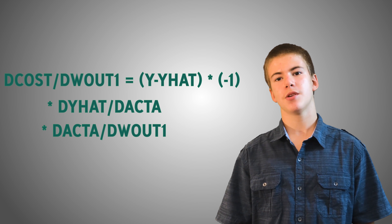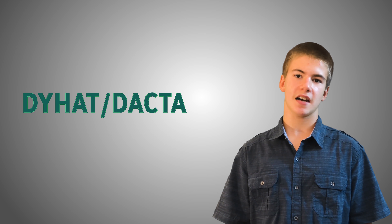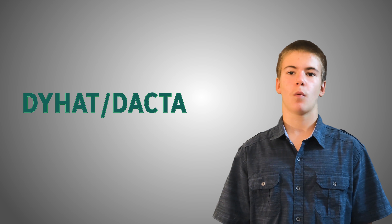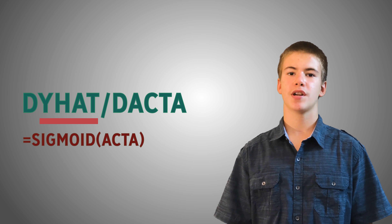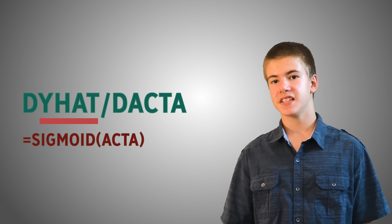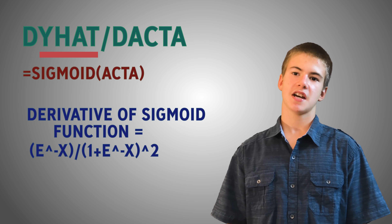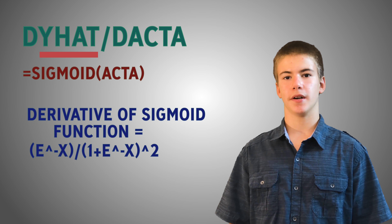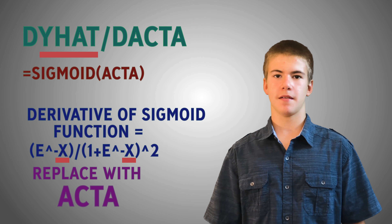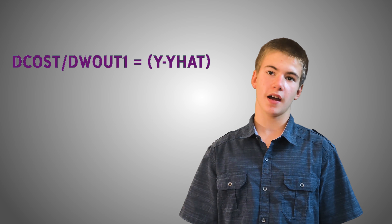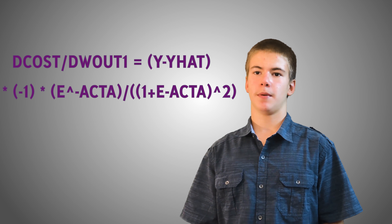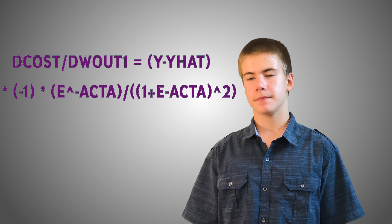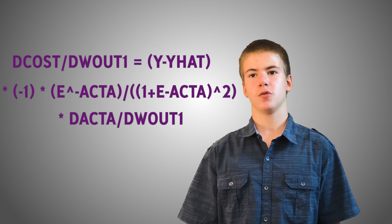In the next step, we need to calculate the derivative of y hat with respect to act a. This is the same as asking what is the derivative of the sigmoid of act a with respect to act a. We can look up that the derivative of the sigmoid is e to the power of negative x divided by 1 plus e to the negative x squared. We just need to replace x with act a.